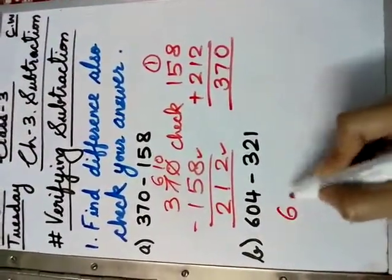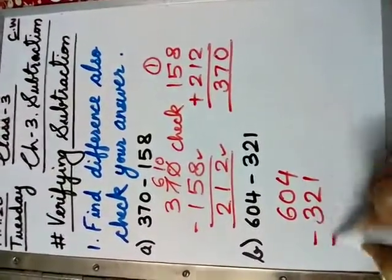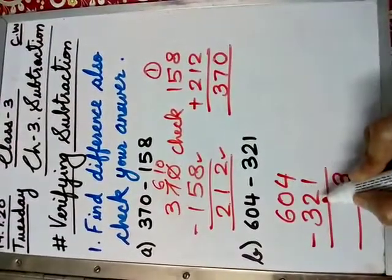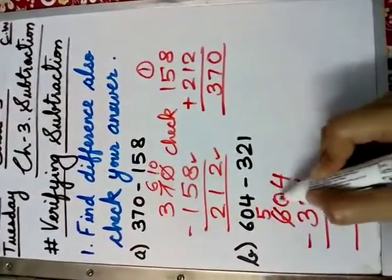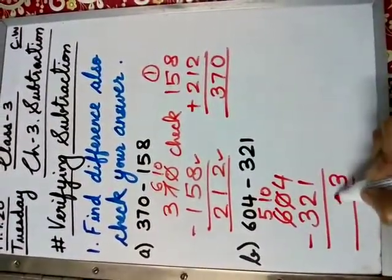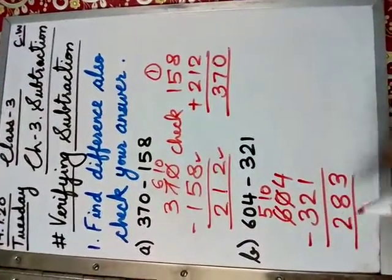Let us do one more question. Write the bigger number first, then the smaller number. Find the difference. 4 minus 1? 3. 0 minus 2? Not possible. So, 6 will be 5. 0 will be 10. 10 minus 2? 8. 5 minus 3? 2.